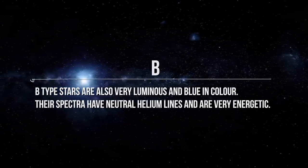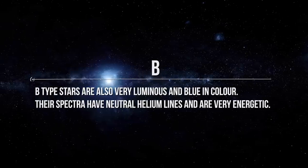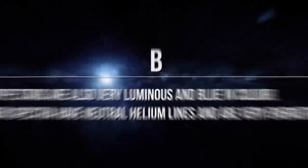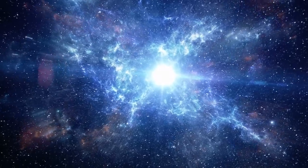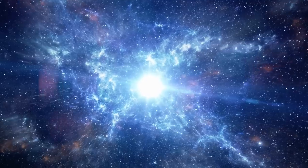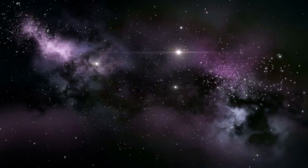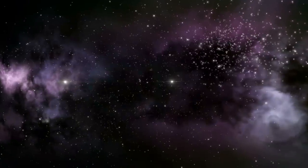Now comes the letter B. B-type stars are also very luminous and blue in color. Their spectra have natural helium lines and are very energetic. Their lifespan is relatively short, around 40 million years. Many stars that we can see from our naked eyes are of this type only. B-type stars are originated from an O-B association that is related to giant molecular clouds.